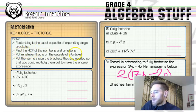Put whatever that is on the outside of a bracket. Then put the terms inside the brackets that are needed so that you could multiply them out to make the original expression. It seems like quite a complicated thing to understand if you don't see it in action, so I'll show you in the first question.